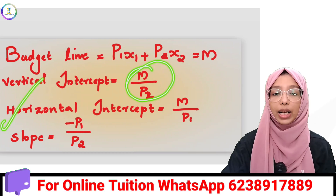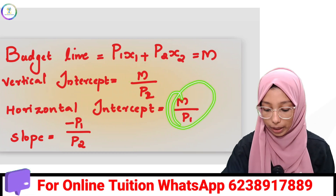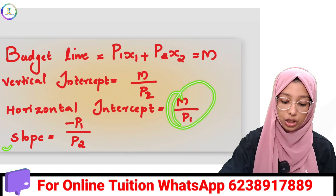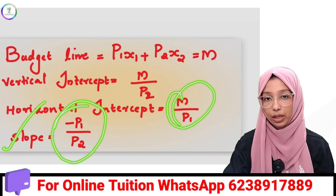The horizontal intercept is m by p1, and the slope is minus p1 by p2.